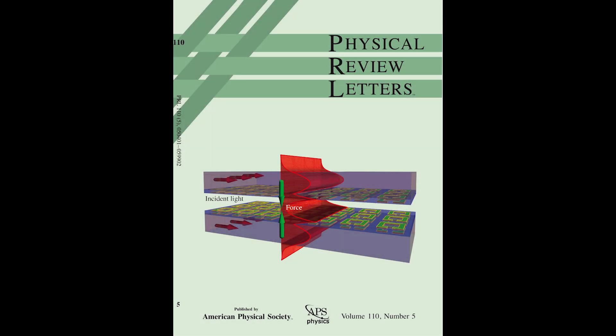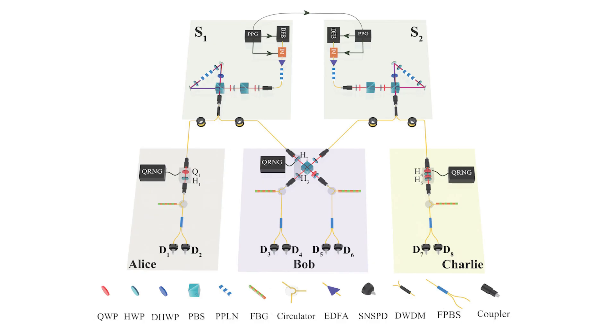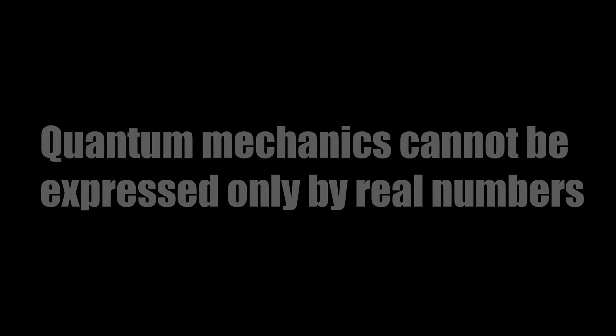In January 2022, two papers were published in an academic journal called Physical Review Letters. Two research teams used completely different scientific methods to arrive at the same conclusion. Based on the results of their highly precise experiments, the research teams concluded that imaginary numbers were crucial for quantum mechanics and were required in order to completely represent the world of quantum mechanics.